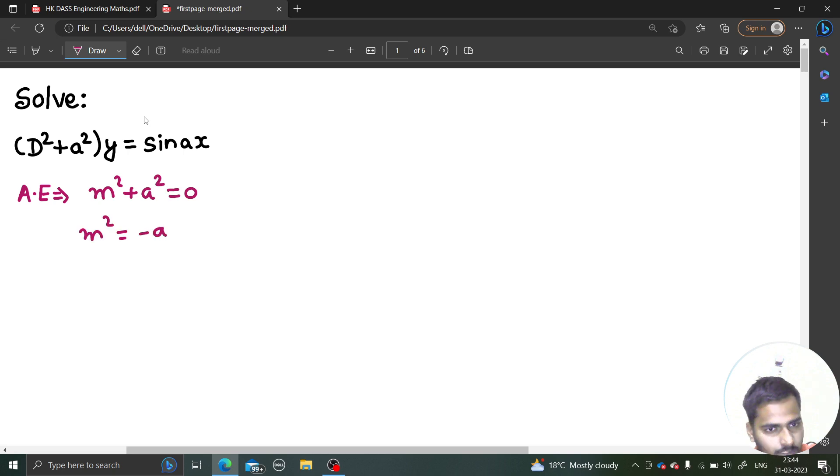So m is plus minus a iota. Fine? So if I write, your m1 should be 0 plus a iota and your m2 should be 0 minus a iota.